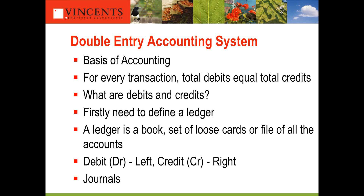The Double Entry Accounting System is the basis of all accounting. For every transaction, debits must equal credits. They're called debits and credits simply as the names given by the 14th-century Italian monk who invented the system. In the old days it was a book or set of loose cards — now it's within accounting software such as MYOB or QuickBooks. All that software is doing behind the scenes is this system of debits and credits — nothing magic just because it's on a computer.